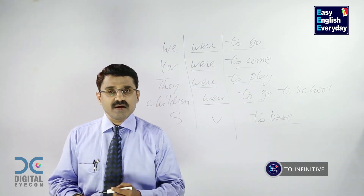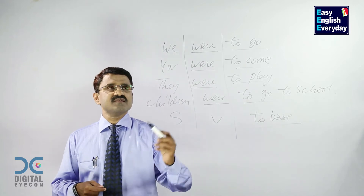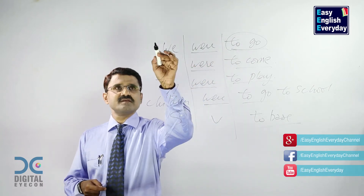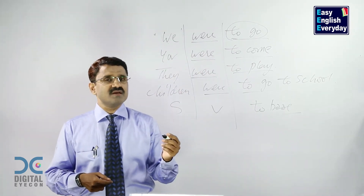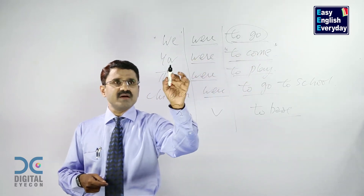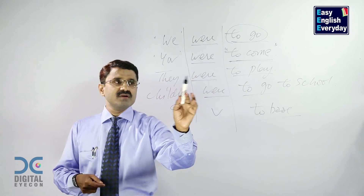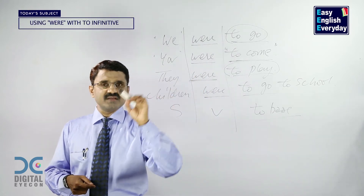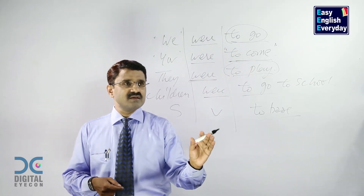All these sentences indicate past tense. According to the meaning of these sentences — 'we were to go' — this was the action which was supposed to be done by these people in the past. But whether it took place or not, we are not mentioning that in the sentence. 'You were to come' — this was an action arranged to be done by this person in the past; it was his past compulsory action. 'They were to play' — this is the action which was supposed to be done by this group of people in the past. Whether they did or not, we are not mentioning that in this sentence.